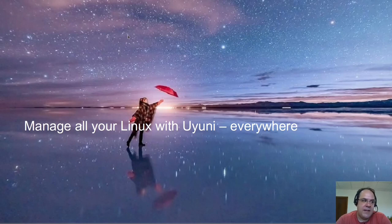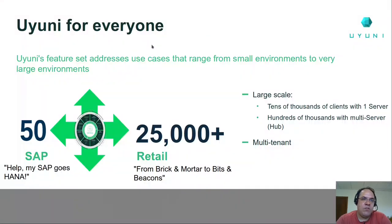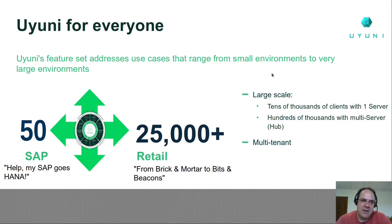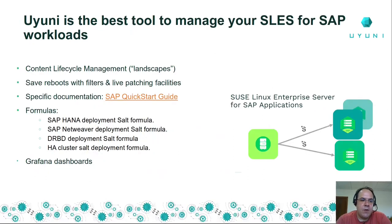In summary, Uyuni works for everyone — 50 systems, 25,000 systems, or even 250,000 systems using the hub multi-server architecture. It's multi-tenant, covering cases where you want one single organization or multiple organizations and system groups. Uyuni is the best tool to manage SLES for SAP workloads. We offer content lifecycle management, live patching, a quick-start guide for SAP, formulas to deploy HANA and NetWeaver, replication with DRBD, high availability, and Grafana dashboards specific for SAP.